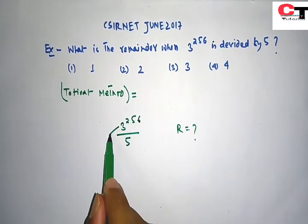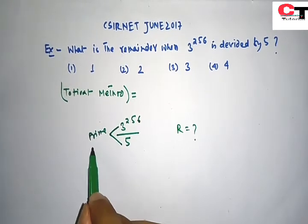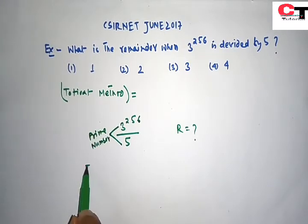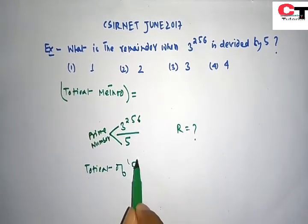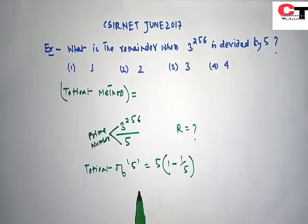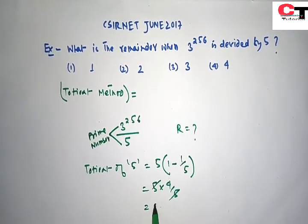In the problem, both numerator and denominator are prime numbers. Therefore, Toshin of 5 will be 1 minus 1 by 5, that is 4.